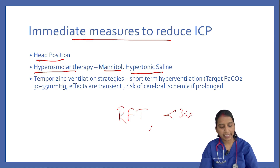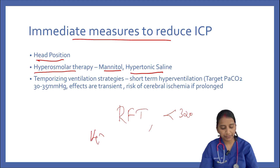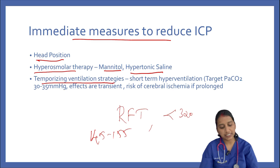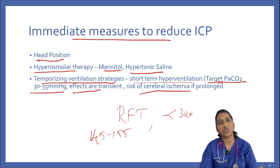Coming to hypertonic saline: 3% saline at 250 to 500 ml IV given over 10 to 20 minutes. Higher concentrations can be used with a central line; monitor serum sodium targeting 145 to 155, avoiding rapid shifts. For ventilation strategies, use short-term hyperventilation targeting a PaCO2 of 30 to 35 mmHg, though effects are transient and prolonged use risks cerebral ischemia. Avoid prophylactic hyperventilation.